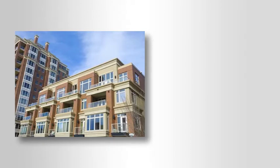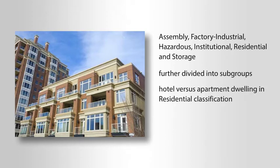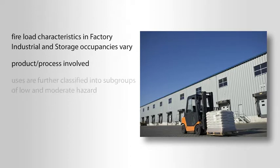In addition to these major classifications, the occupancy groups of assembly, factory industrial, hazardous, institutional, residential, and storage are further divided into subgroups in order to accommodate some variations in the hazards associated with the uses within each group. For example, a hotel versus an apartment dwelling in the residential classification. The fire load characteristics in factory industrial and storage occupancies vary considerably depending upon the product or process involved, and therefore these uses are further classified into subgroups of low and moderate hazard depending upon the potential fire severity.